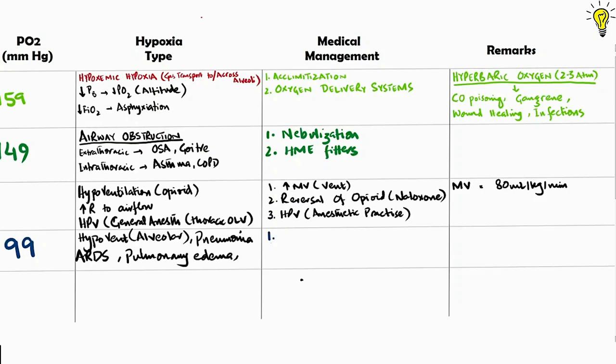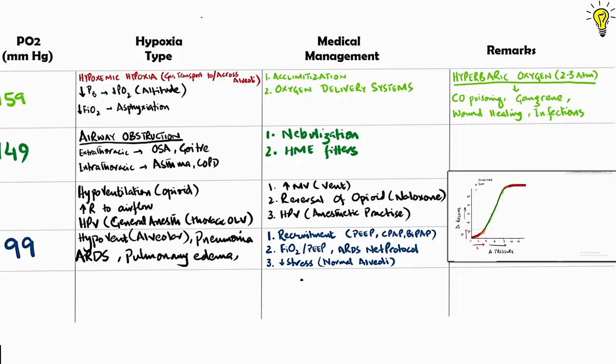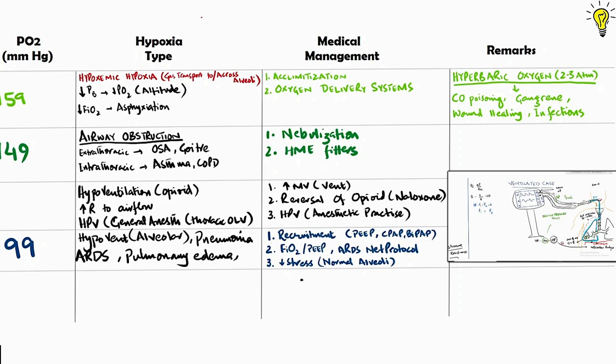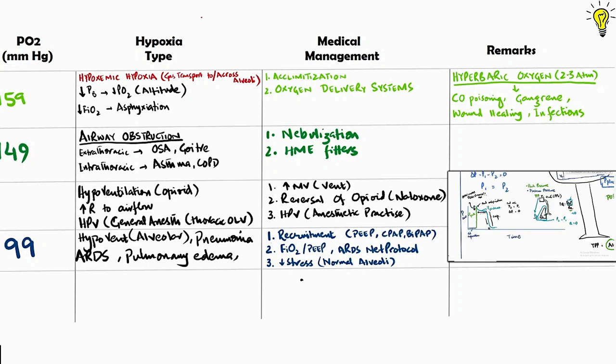To improve this compliance issue of alveoli we then have recruitment maneuvers such as peak end expiratory pressures or PEEP, CPAP, deep breathing exercises post surgery to reduce basal atelectasis. Similarly balancing the PEEP and fraction of oxygen and ARDS NET protocol and ventilatory strategies to reduce the shear stress on normally functioning alveoli. I have covered this topic on compliance of alveoli and ventilatory strategies for ventilated and spontaneously breathing patients. Link in top right corner.